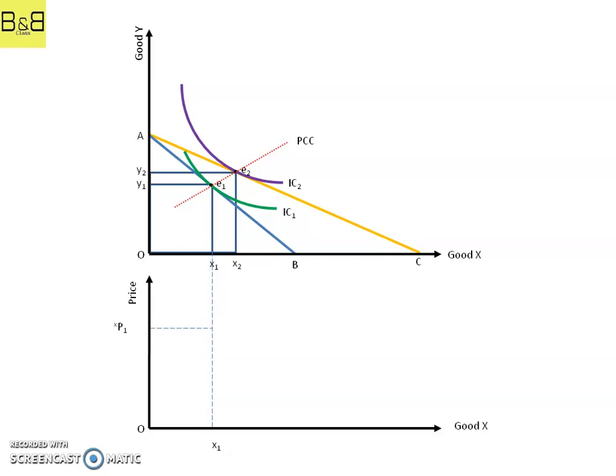Now, as we assumed earlier that the price of good x was reduced, let us suppose the price has reduced to P2, whereby the consumer attains its equilibrium on the higher IC curve, that is IC2, at point E2 consuming x2 quantity of good x.